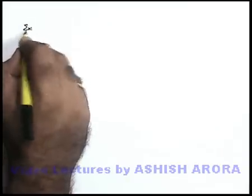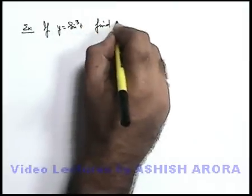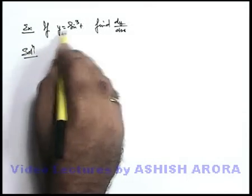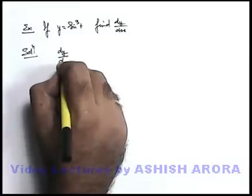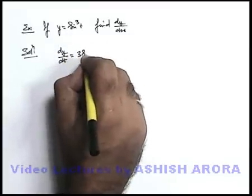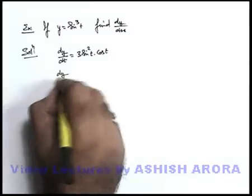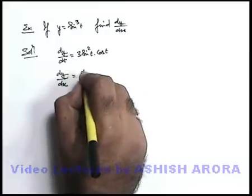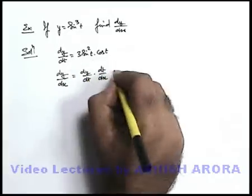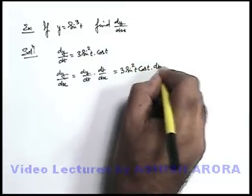Let's see another example of the same category. We are given y = sin³(t) and we are required to find dy/dx. Since y is given in terms of t, we can directly evaluate dy/dt using the chain rule: dy/dt = 3sin²(t) · cos(t). We are required to find dy/dx, so we write: dy/dx = (dy/dt) · (dt/dx) = 3sin²(t) · cos(t) · (dt/dx). This will be the answer to this question.